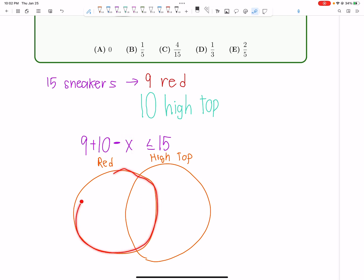9 is the number of shoes here. 10 is the number of shoes here. And then X is the overlap here. So 9 plus 10 minus X represents the total number of shoes that are either red or high-top, right?